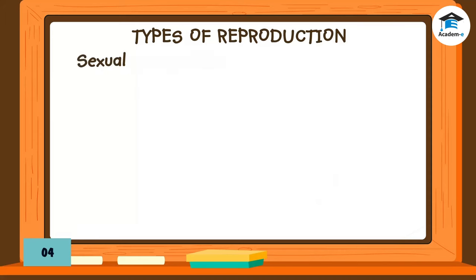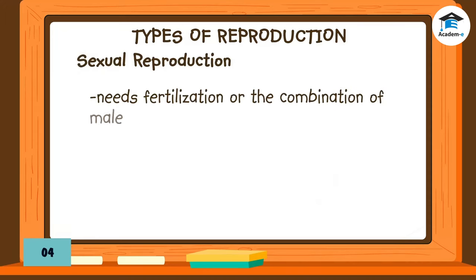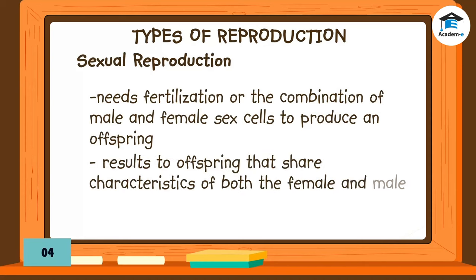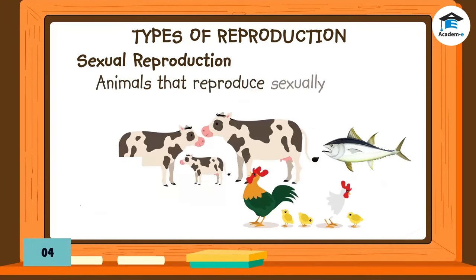Sexual reproduction requires fertilization — the combination of male and female sex cells — to produce an offspring. It results in offspring that share characteristics of both the female and male parents. Examples of animals that reproduce sexually include cows, chickens, and fish.